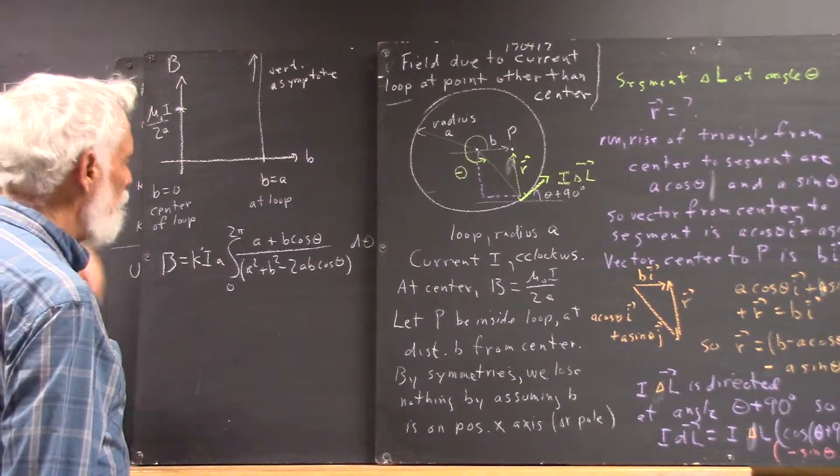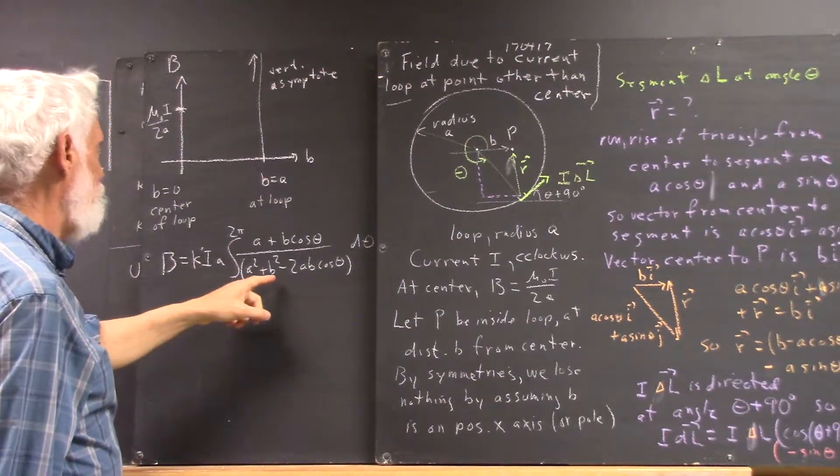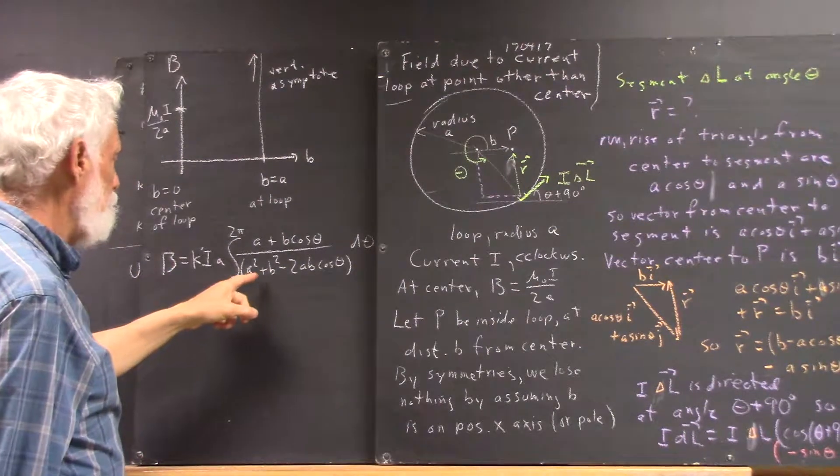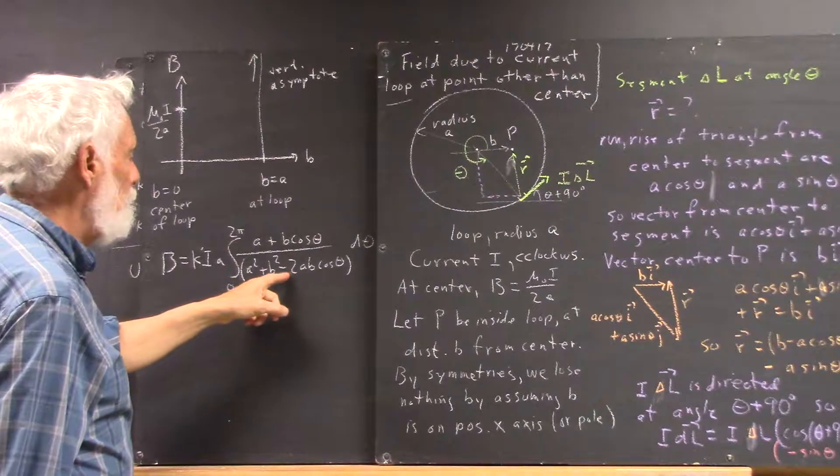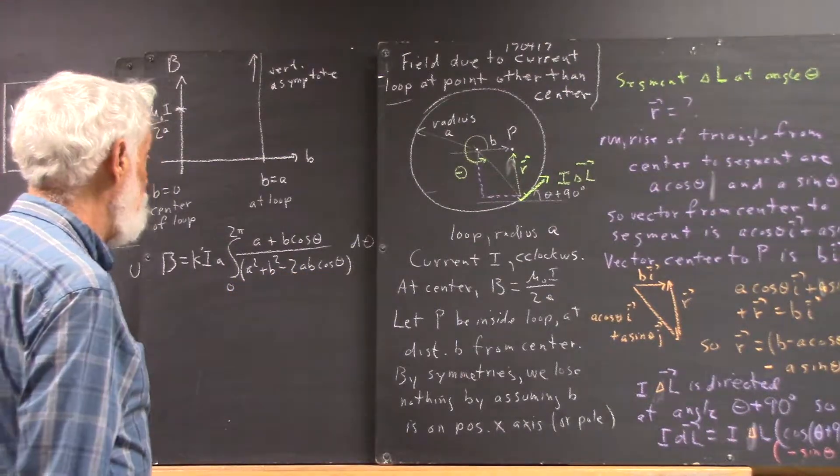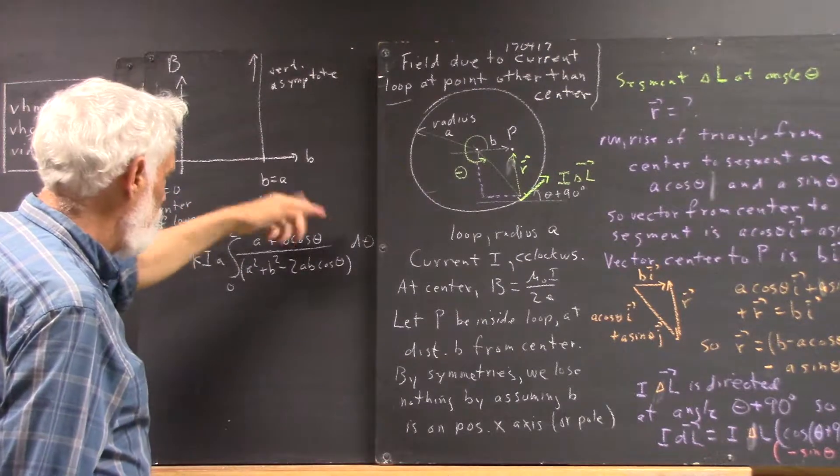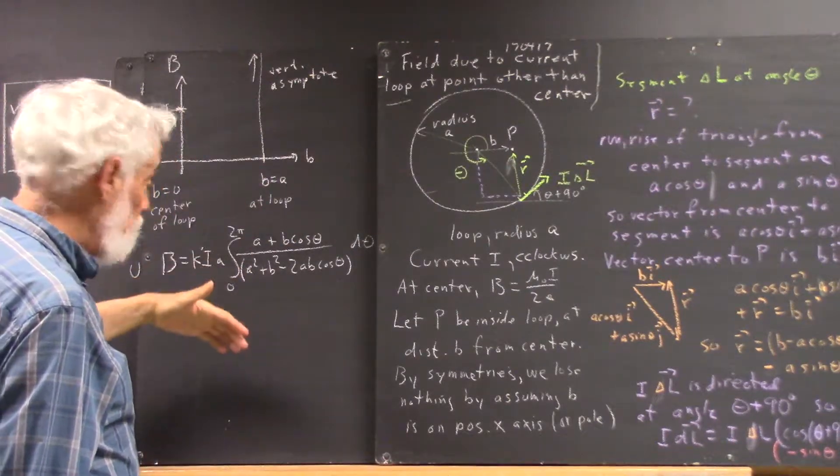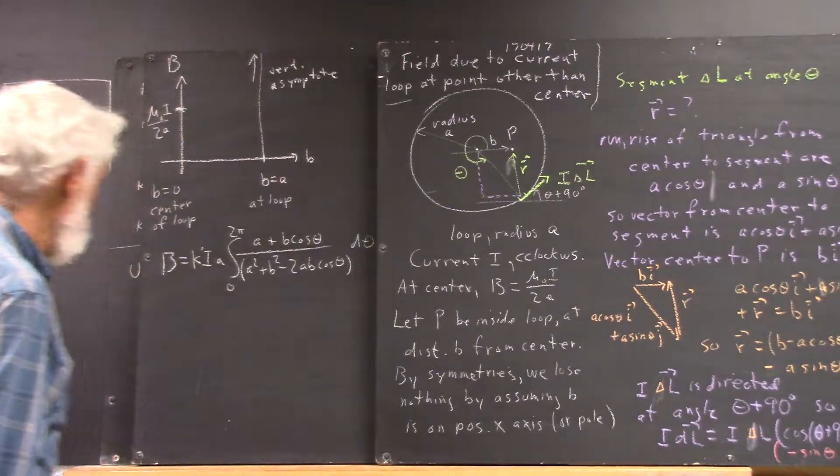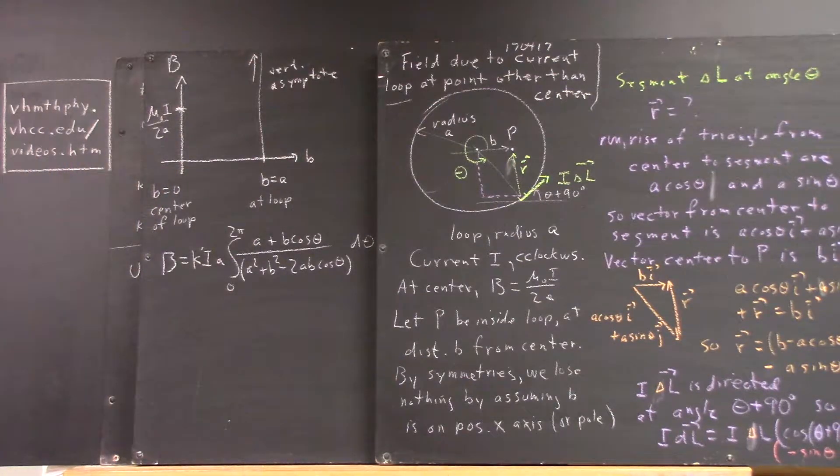If B equals A, then you've got an A squared here, an A squared here, and a minus 2A squared cosine theta here. And you get an A times 1 plus cosine theta up here, simplifies, and I think that's going to be an integral that's not difficult to do. I have to write it out.